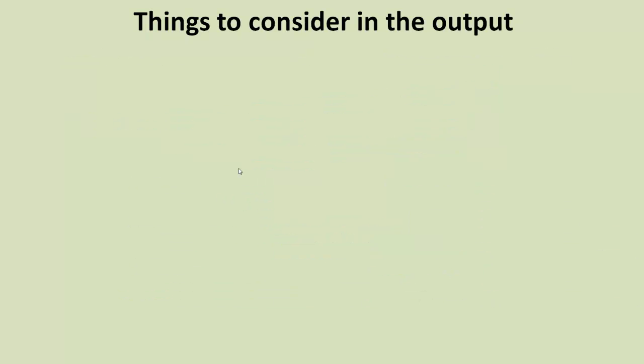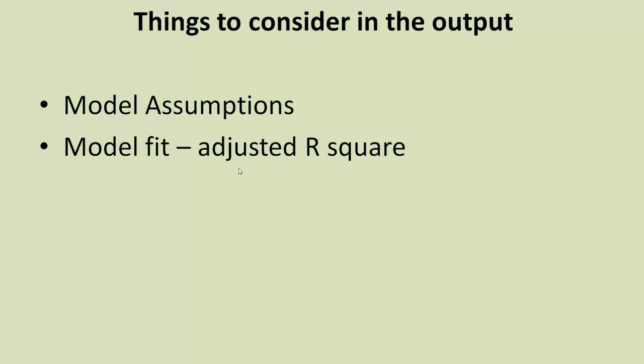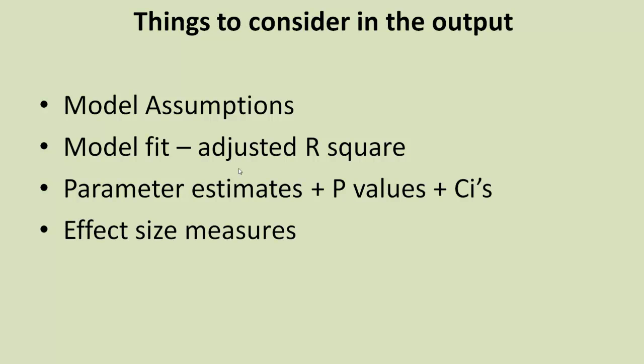So things to consider in the output when we do this analysis. First of all, the model assumptions. Then model fit, adjusted R square, which we came across in simple regression. And then the parameter estimates and the p-values associated with each, and the confidence intervals associated with them as well. And finally, the effect size measures.